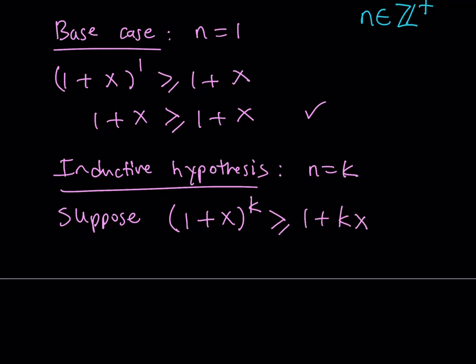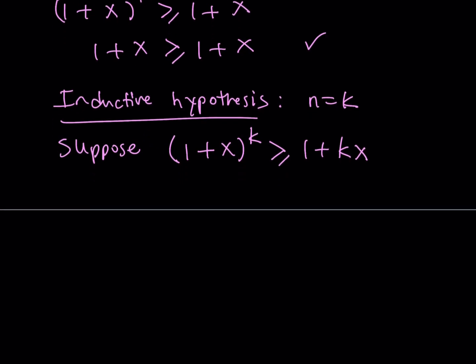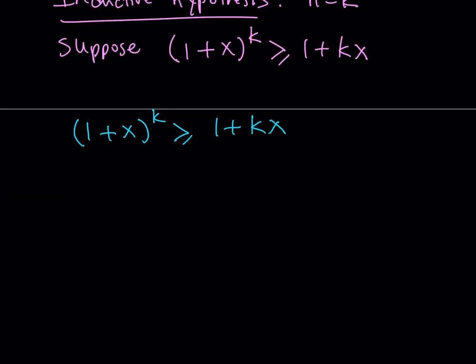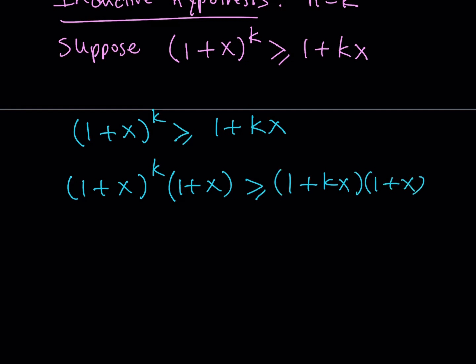Our goal is, by using this inductive hypothesis, to prove the case for n equals k plus 1, which looks like the same thing with k replaced with k plus 1. I will take this inequality, which is assumed to be true, and multiply both sides by 1 plus x. Since x is a positive quantity, 1 plus x is also positive, so we can multiply without changing the sign.